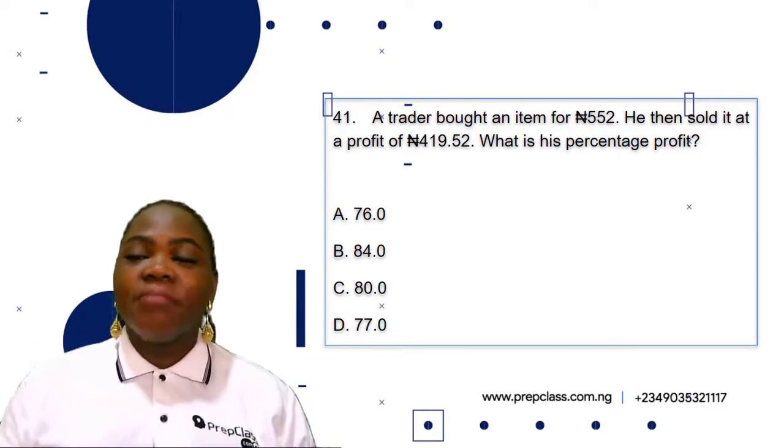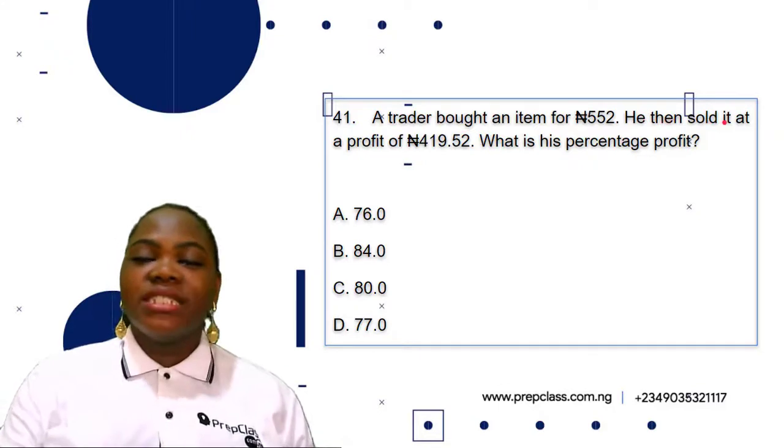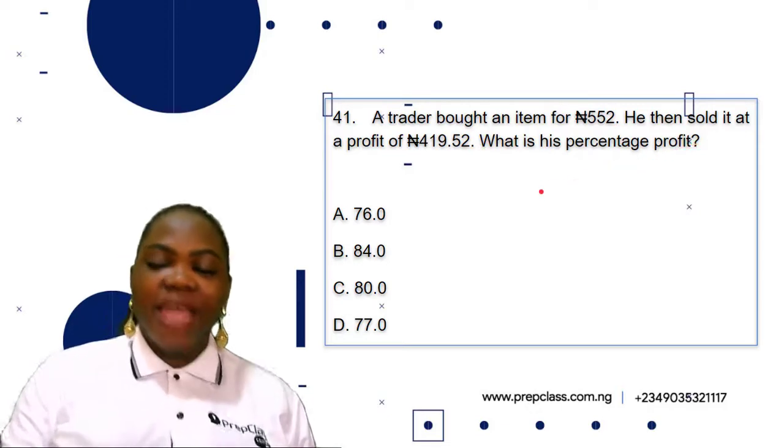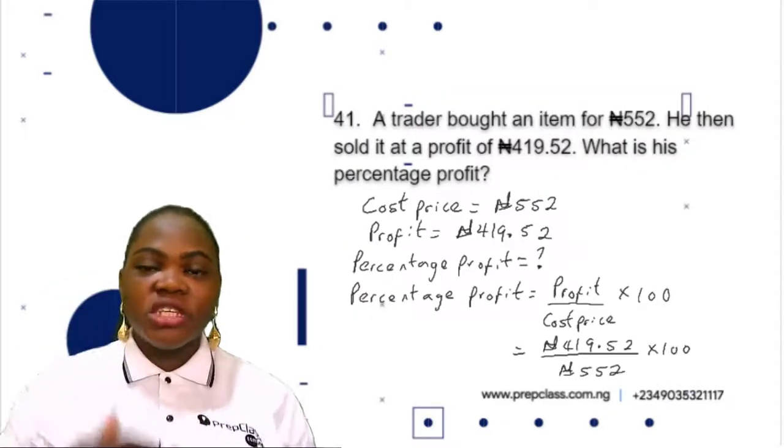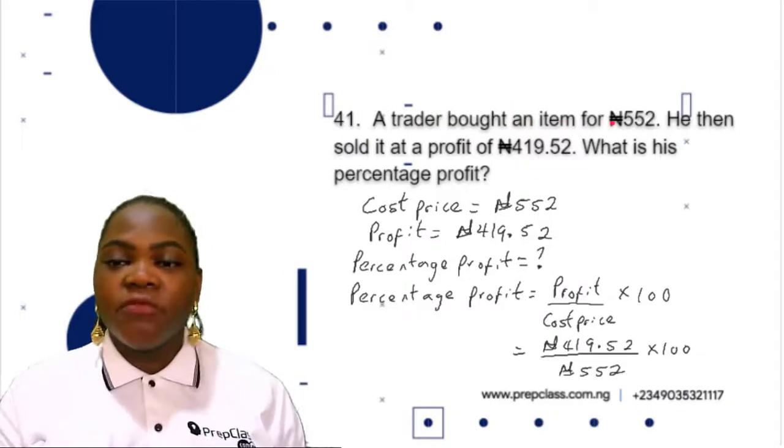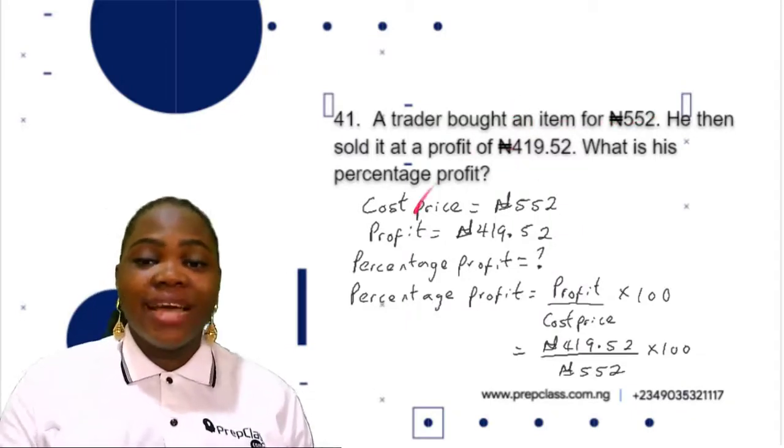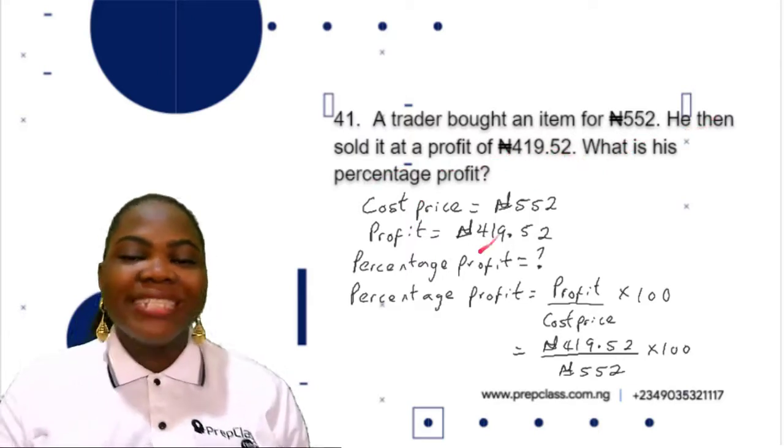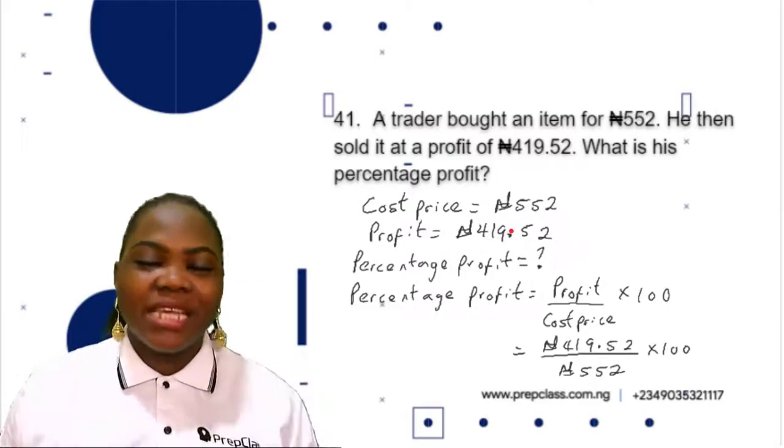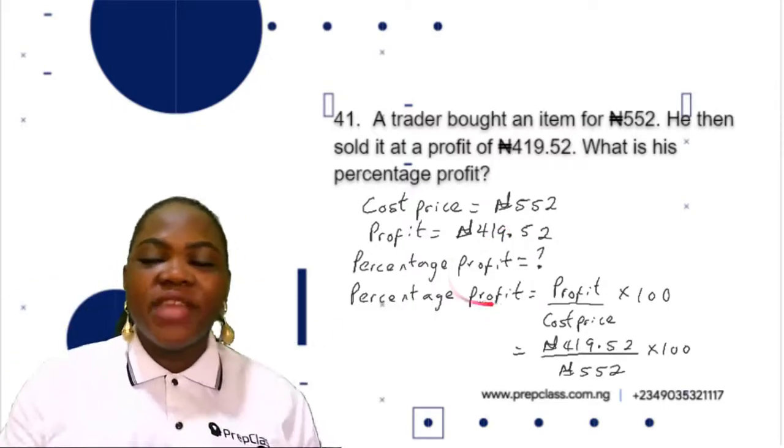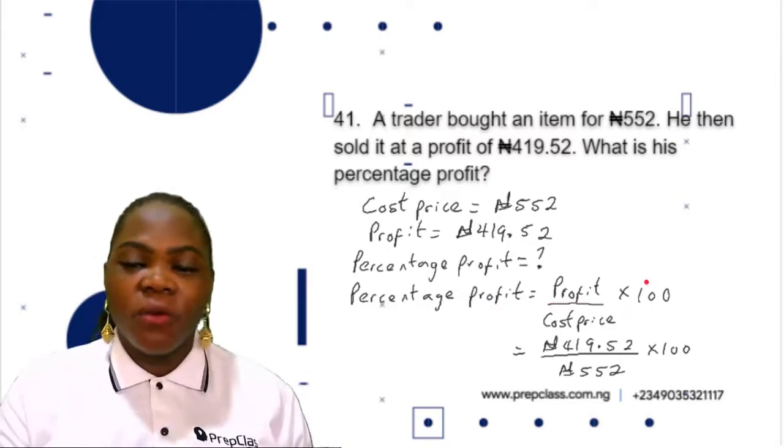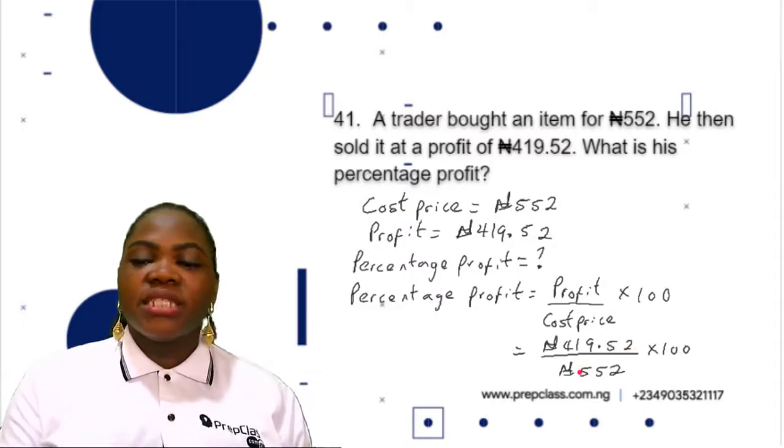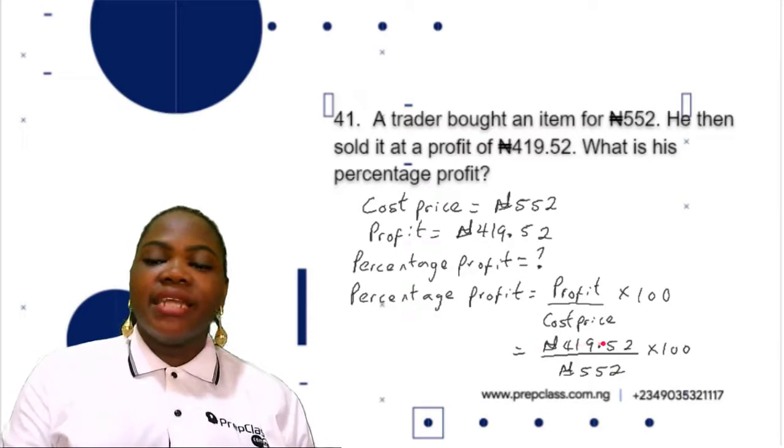A trader bought an item for ₦552. He then sold it at a profit of ₦419.52. What is his percentage profit? First, we bring out all the information given. The cost price is ₦552, the profit is ₦419.52. The percentage profit is given as profit divided by cost price multiplied by 100.